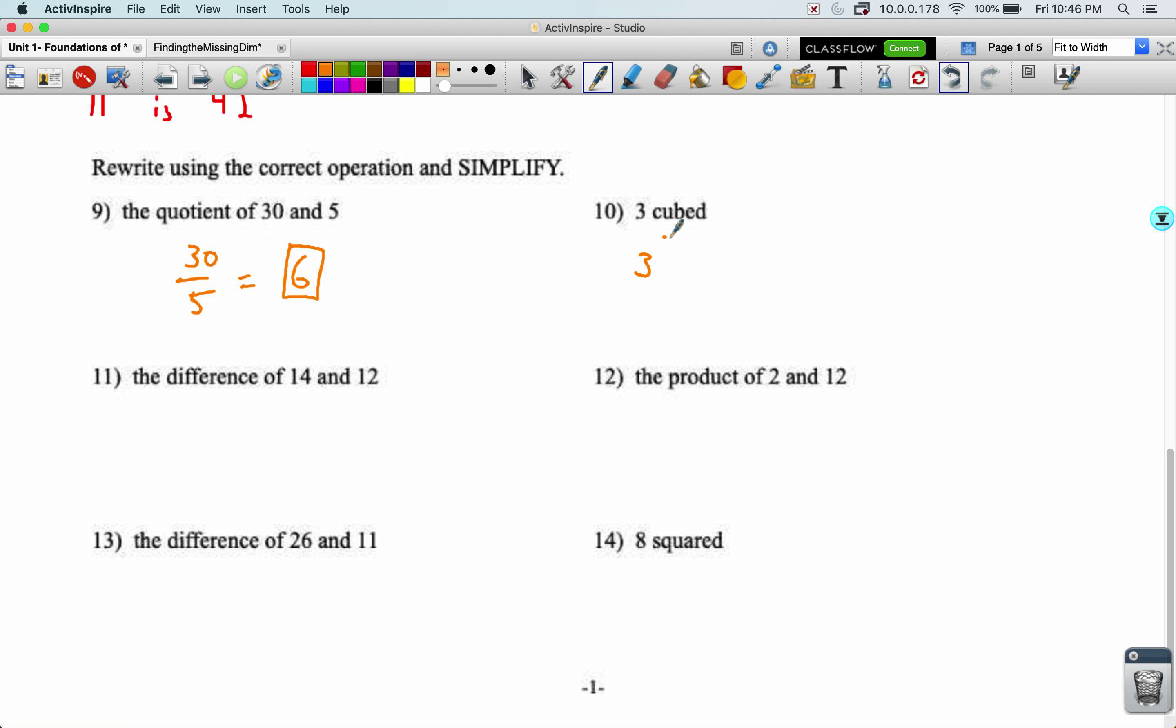Three cubed. That means write three with the exponent of three. That's the same as three times three times three, which becomes a 27 when simplified.